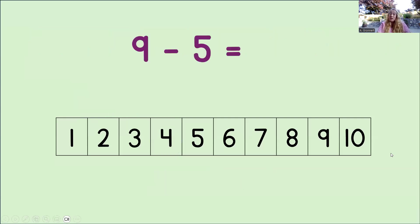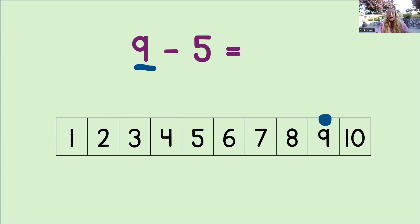What do we do when we want to count back to subtract? Well, we start with the first number in the equation. That's the minuend. And for this equation, it's the number 9. Then we mark the number 9 with a big dot on the number line like this.